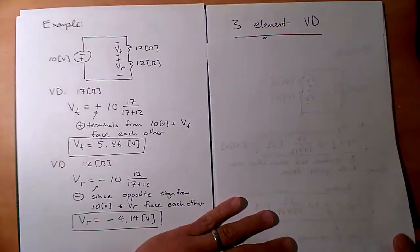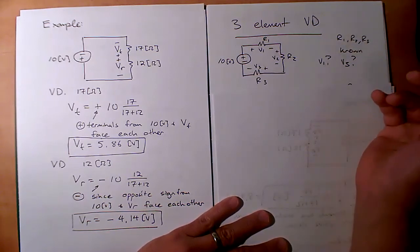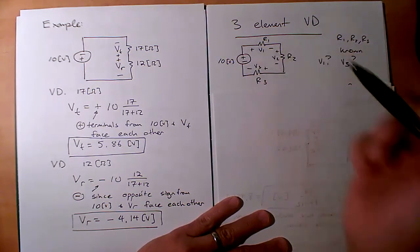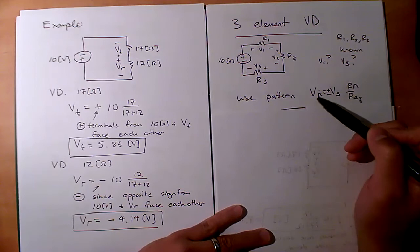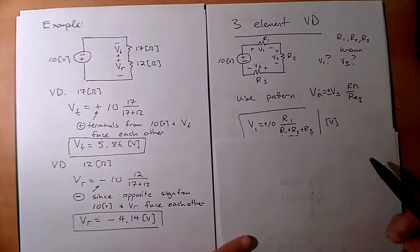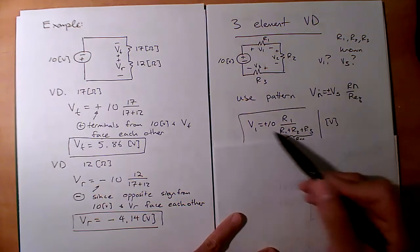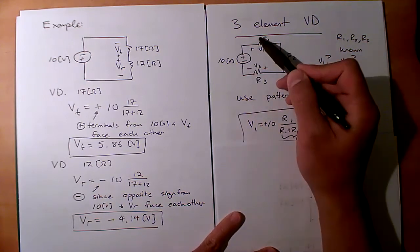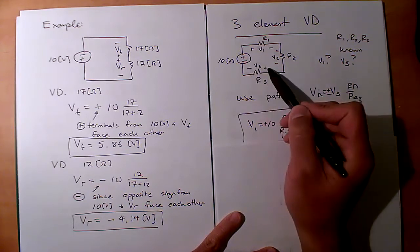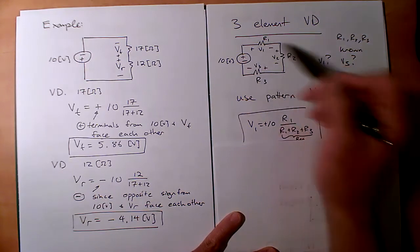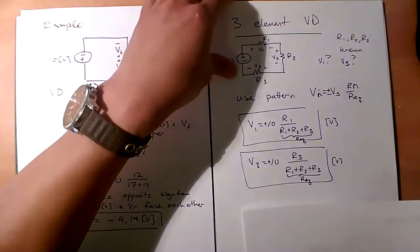For more than two resistors in series, voltage divider still applies. With known R1, R2, R3 and source VS: V1 = +VS · R1/(R1+R2+R3) and V3 = +VS · R3/(R1+R2+R3). Both use positive sign here because positive terminals face each other. Don't forget to include units.